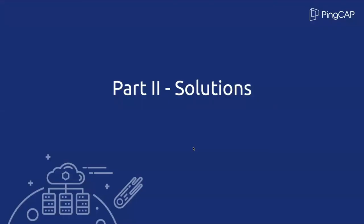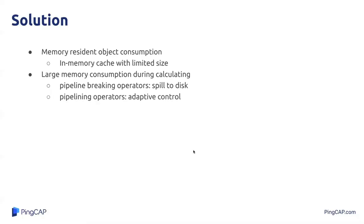So what can we do to protect the SQL Engine from out-of-memory in those mentioned situations? To limit the memory consumption of the memory-resident object, we can use an in-memory cache with limited size. When the memory threshold is reached, we choose some items to evict according to a specific policy to ensure the memory is limited. To limit the memory space consumption during calculating, we introduce a strategy for the pipeline breakers and the pipeline operators separately. Briefly speaking, we spill the intermediate data to disk for the pipeline breakers and use an adaptive control strategy for the pipeline operators.